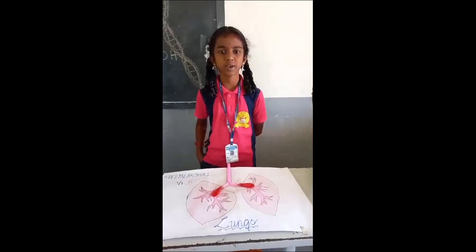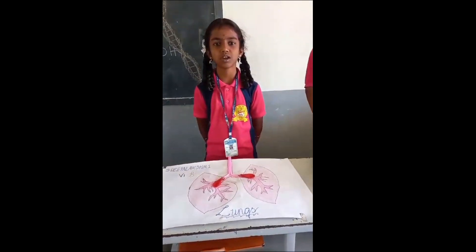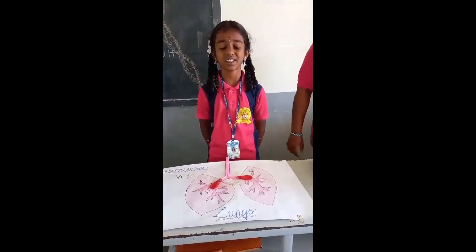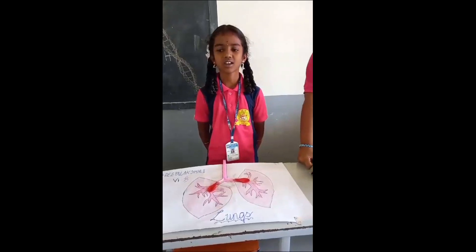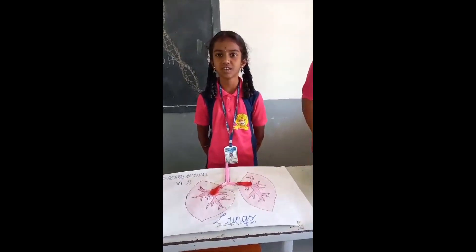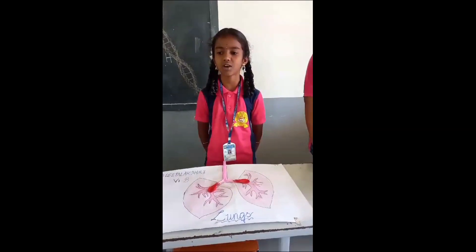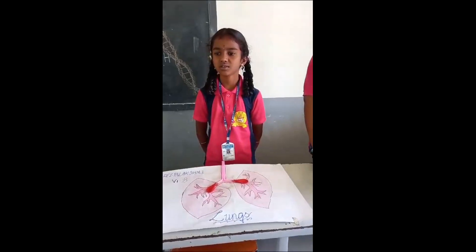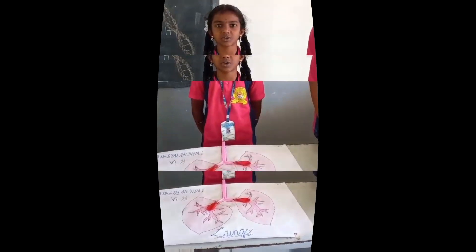Good morning to all. My name is Shamsabashi. I am studying in 6th standard. I will talk about lungs. We have two lungs. The right lung is bigger than the left. All organisms need energy — we get energy from food. Oxygen helps in breaking down our food, and we get oxygen by breathing. Lungs are an important organ in breathing and respiration. Thank you.